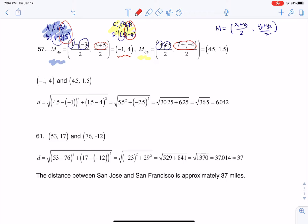This is the midpoint for segment AB. This is the midpoint for segment CD. So it's asking us to find the distance between these two points. Find distance between these two points.